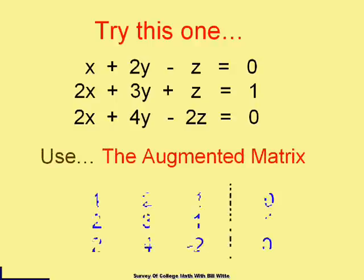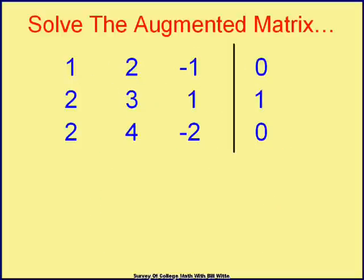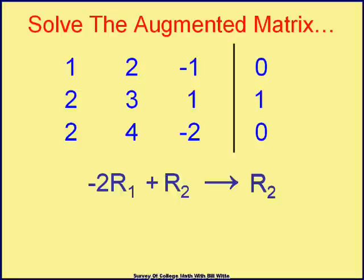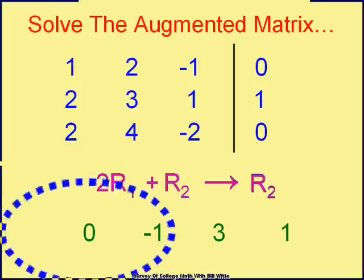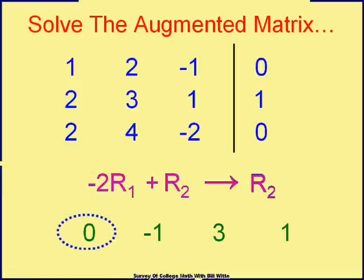Let's do it with three variables. Let's try and solve this. First let's represent it with a matrix: first row is 1, 2, negative 1, and 0; second row is 2, 3, 1, and 1; third row is 2, 4, negative 2, and 0. I want to get zeros first. I'm going to multiply row 1 by negative 2 and add it to row 2, and replace row 2. I end up with 0, negative 1, 3, and 1 for row 2 — I wanted that zero. I love zeros, especially early in the problem.